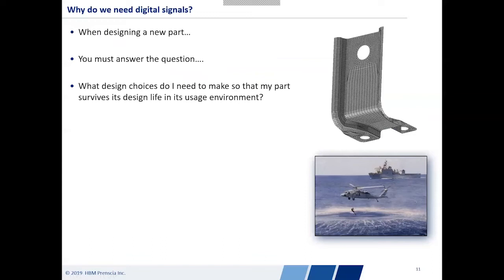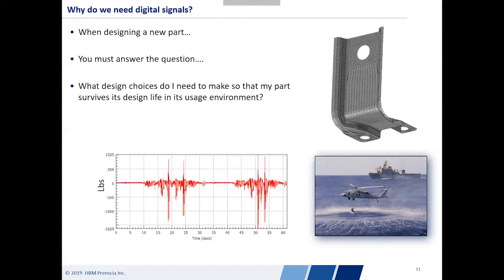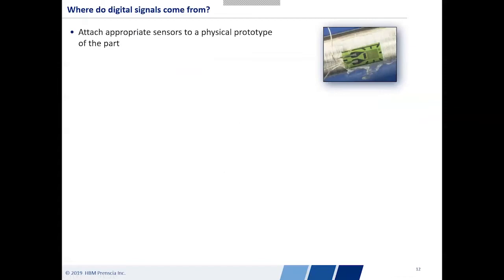How do I find that information? You can go record some data and look at it. The first thing we're going to do is attach appropriate sensors to some sort of physical prototype of the part. Data acquisition is a whole different branch of engineering. For the sake of this presentation, we'll assume that somebody has intelligently picked the right sensor, put it in the right location, oriented it correctly, and we're recording the data we actually want to record.